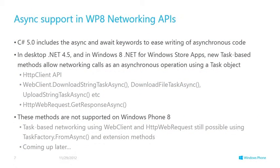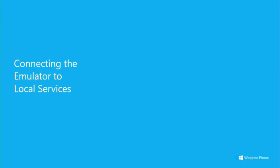Async and await is the new way of writing asynchronous code — it's great but takes a little while to get your head around, it's a new programming approach. In .NET 4.5 and in Windows Store apps, all networking calls and potentially long-running operations are based on the task async/await model — the Task Parallel Library. We don't have that in the Windows Phone 8 APIs, but we can add this with a few workarounds.